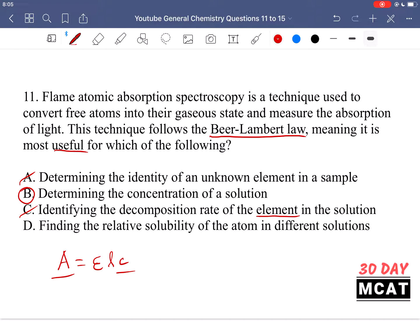And option D is saying finding the relative solubility of the atom in different solutions. So this is talking about relative solubility, and that's not really something we do. We don't change the solvent and see the solubility of something in different solvents. That's not really something we do with spectroscopy. We keep the solvent the same and what we're changing is usually the concentration. So that's not something we do with the Beer-Lambert law. So D is incorrect.